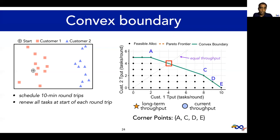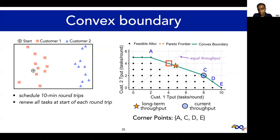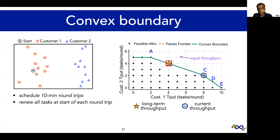The key idea is that as we look at this problem over multiple rounds, the set of feasible throughputs becomes denser, and the Pareto frontier starts to approach the convex boundary. Mobius picks schedule A in the first round, since it's the corner point that's closest to the target throughput. After the first round, the long-term throughput is also at A. In the next round, Mobius chooses C, moving the long-term throughput to the midpoint of line segment AC, already closer to the target throughput. In the third round, Mobius picks A again. And if we repeat this, choosing between A and C at the right frequency, the long-term throughput converges to the target throughput.